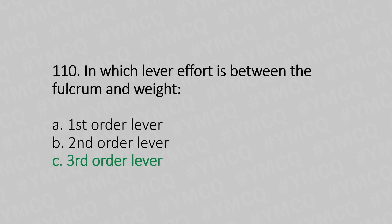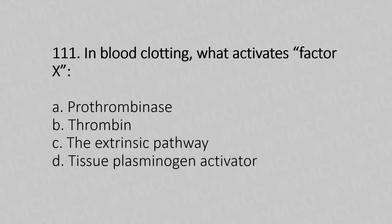Question number 111: In blood clotting, what activates Factor 10? Option A: prothrombinase, Option B: thrombin, Option C: the extrinsic pathway, Option D: tissue plasminogen activator. The answer is Option A, prothrombinase.